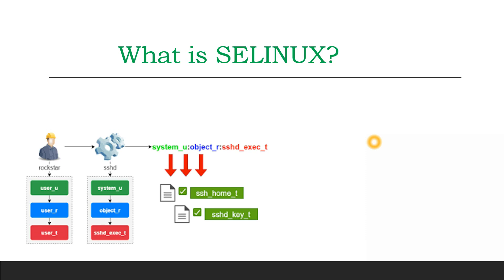We are depending on our smartphones a lot nowadays for everything. We store lots of sensitive data including banking-related information on our devices. It is very important to ensure that hackers or malicious attackers will not be able to access that sensitive data easily. For that purpose — to protect the sensitivity and integrity of data — SELinux was introduced.